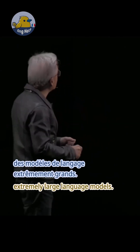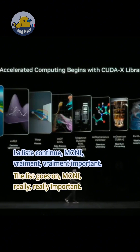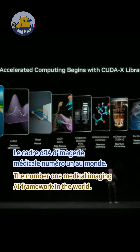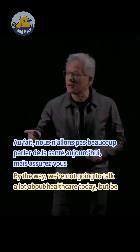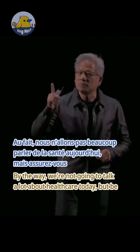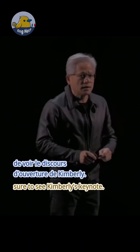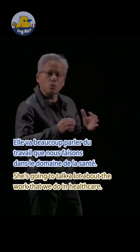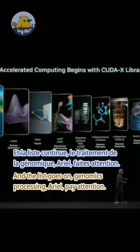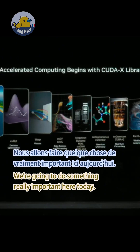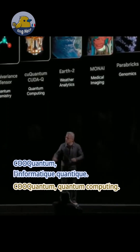The library on top of it called Megatron-Core made it possible for us to simulate and train extremely large language models. The list goes on — MONAI, really important, the number one medical imaging AI framework in the world. We're not going to talk a lot about healthcare today, but be sure to see Kimberly's keynote — she's going to talk about the work we do in healthcare.